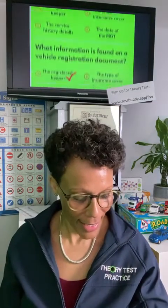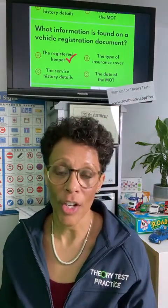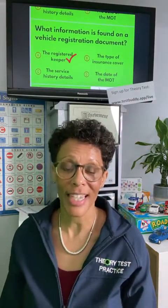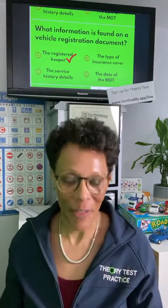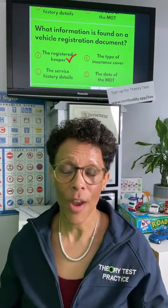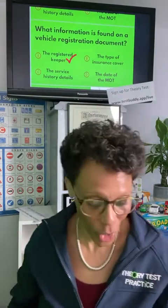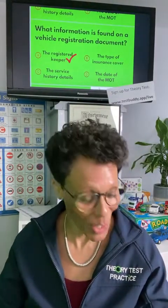The answer is A — the registered keeper of the vehicle. Remember, it's not the owner. The owner is the person who pays for it; the registered keeper is the person who keeps and uses the vehicle, and their details are on the registration document. Well done if you got that right!